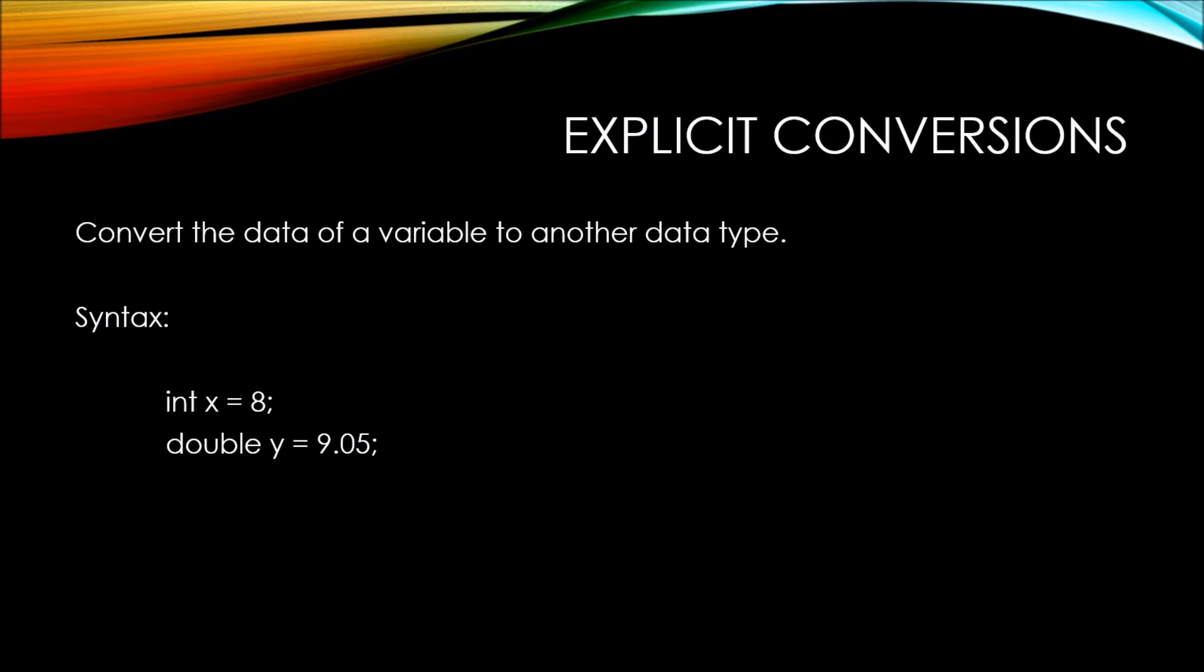If we wanted to add the two values together, we would need to do something like this. We're defining another variable called sum, and we're assigning it the value of y plus x. But you can see that in front of the x variable, inside parentheses, we're specifically stating that value x should be evaluated as if it was a double data type.